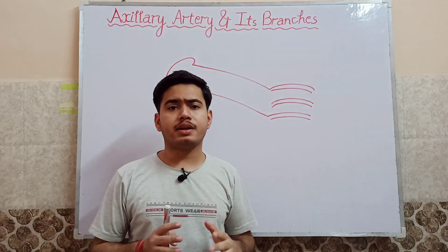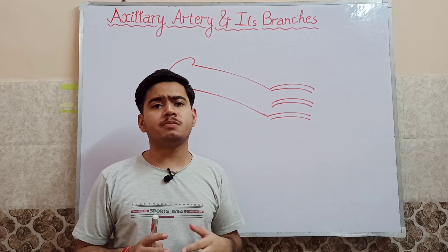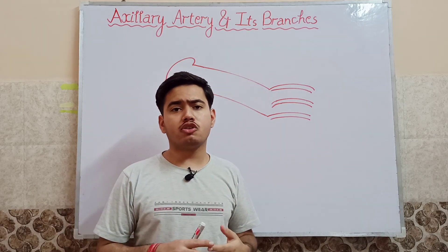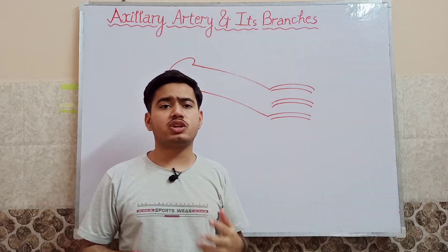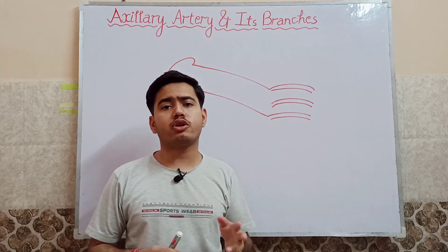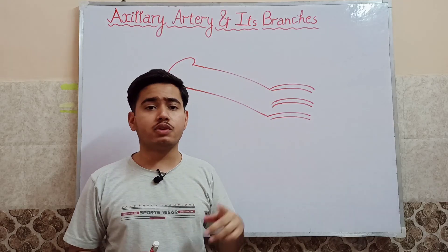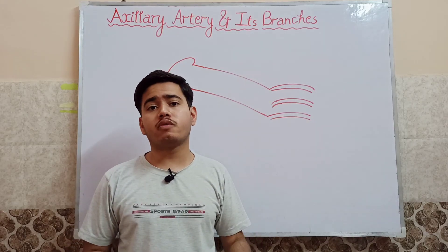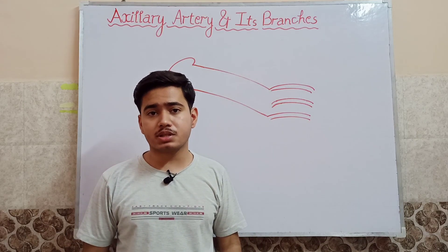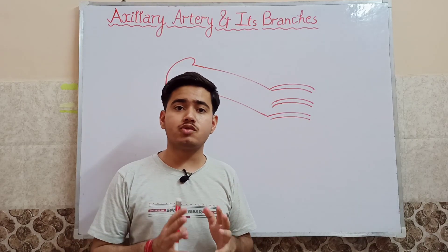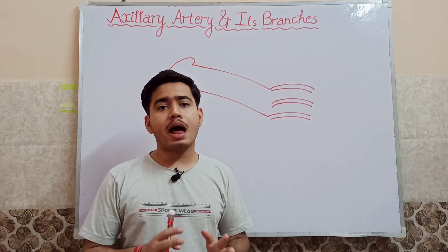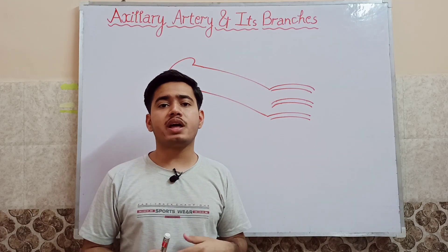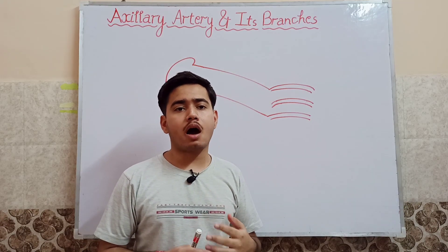What is an axillary artery? The axillary artery is basically a part or the continuation of the subclavian artery, which extends from the outer or lateral border of the first rib to the lower border of the teres major muscle, where it continues as the brachial artery. Its position changes with the direction of the arm — for example, if we adduct or abduct our hand, its position changes.